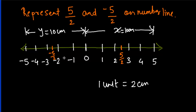So technically, what you have to do is: first draw the number line, then plot the points of the numerator — that is 5 and minus 5 — marking 0, 1, 2, 3, 4, 5 and minus 1, minus 2, minus 3, minus 4, minus 5. Then divide that distance by the denominator, which is 2. The distance from 0 to 5 is 10 cm; divide by 2 and that point gives you the required fraction. To decide the length, select a value that is easily divisible by the denominator.